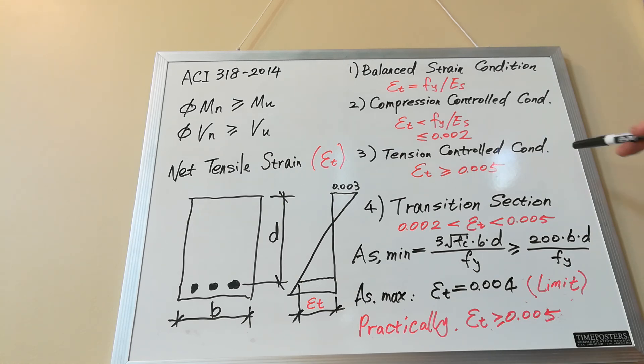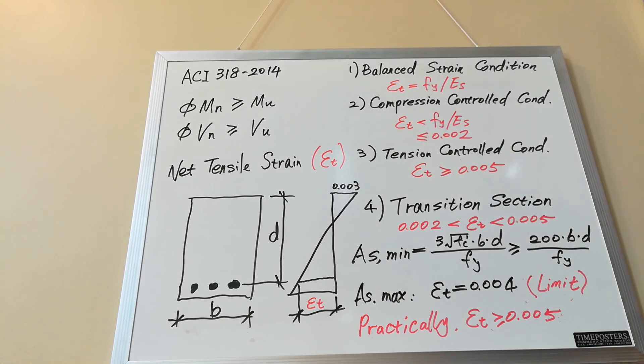Now the third condition is tension-controlled condition. This is the condition where the net tensile strain epsilon t is greater than 0.005.